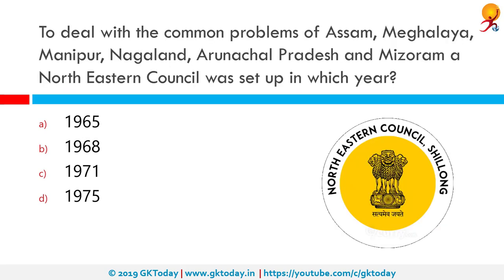To deal with the common problems of Assam, Meghalaya, Manipur, Nagaland, Arunachal Pradesh and Mizoram, a Northeastern Council was set up in which year? The correct answer is 1971. The Northeastern Council is a statutory advisory body established in 1971 by the Northeastern Council Act 1971, for three key objectives: balanced development of the northeastern region, better interstate coordination, and maintaining security and public order in the region. The council consists of eight member states — Arunachal Pradesh, Assam, Manipur, Meghalaya, Mizoram, Nagaland, Sikkim and Tripura. In 2002, Sikkim became the eighth member state. The secretariat is located at Shillong in Meghalaya.